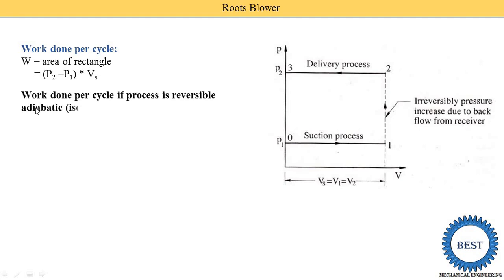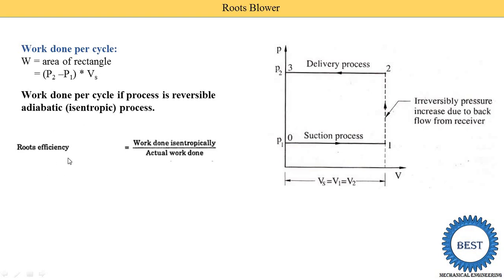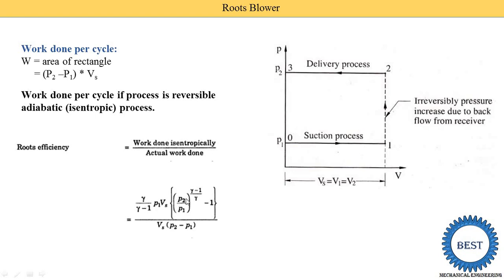Work done per cycle when the process is isentropic is given by this equation. The efficiency of the roots blower equals the isentropic work done divided by the actual work done. The isentropic work done is: W_isen = [γ/(γ−1)] × P1 × Vs × [(P2/P1)^((γ−1)/γ) − 1], which is the same equation derived for a reciprocating compressor, divided by the actual work done.